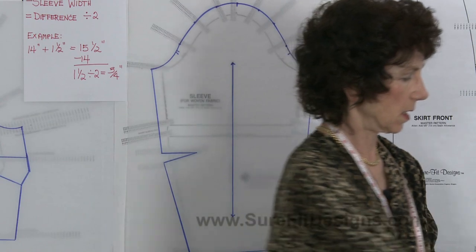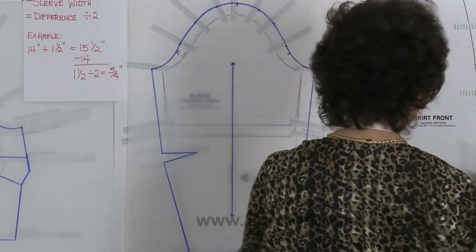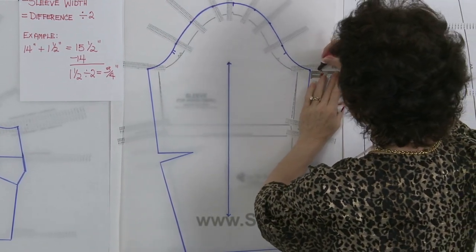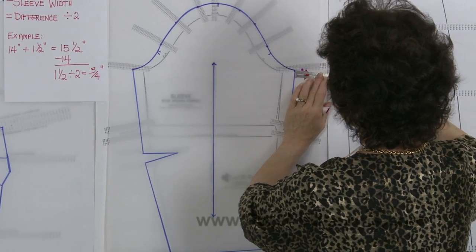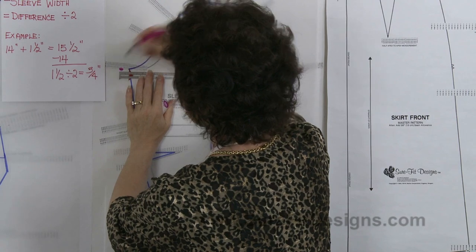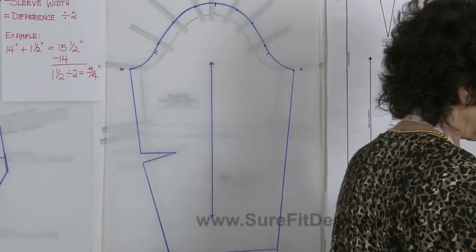However, I'm doing it over two seams, so I'm going to divide that in half, meaning that at each underarm point I need to add three quarters of an inch. Just use your seam gauge to measure out three quarters of an inch, and do the same thing on the other side.